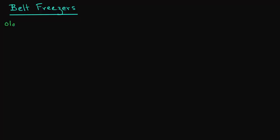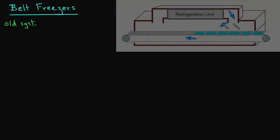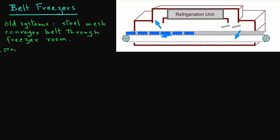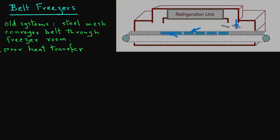Belt freezers have been used for a long time. The old systems involved running a steel mesh conveyor belt through a freezer room. However, this did not provide very good heat transfer because of non-uniform airflow in the freezing room.